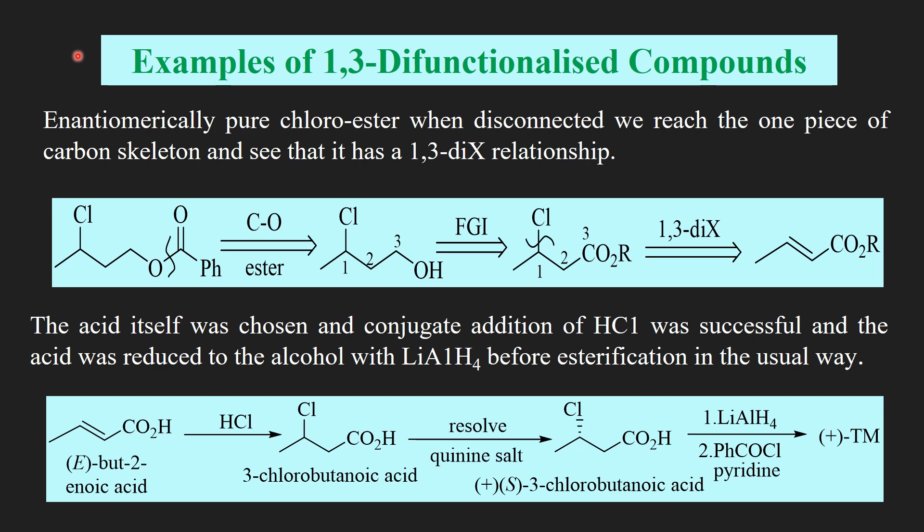For example, an enantiomerically pure chloroester is disconnected from the ester and we get 1,3-di-X relationship. Then alcohol is converted into ester by FGI and is broken down. The chloride can be added as a conjugate addition. Here we take the acid itself as a starting material for the conjugate addition. HCl is added to obtain 3-chlorobutanoic acid, which is a racemic mixture. It can be resolved as a quinine salt, and after that, reduction with lithium aluminum hydride and esterification gives us the target molecule.